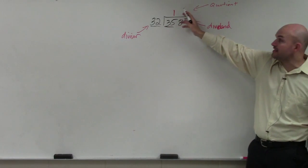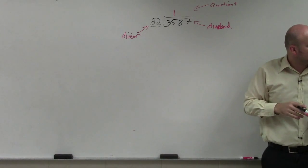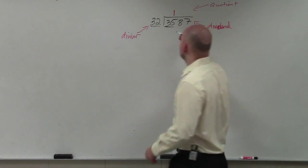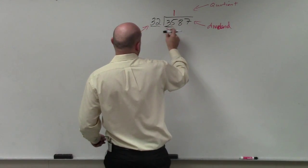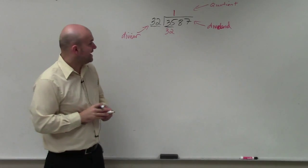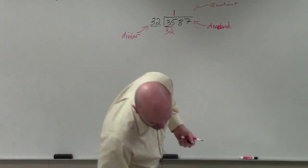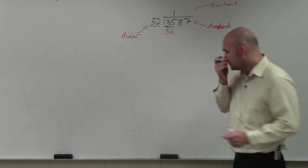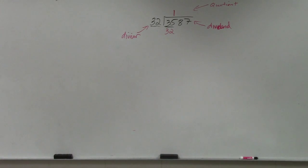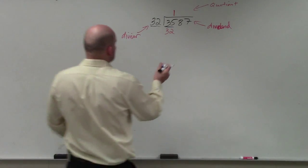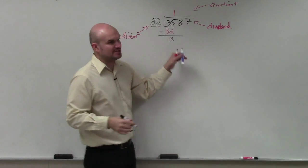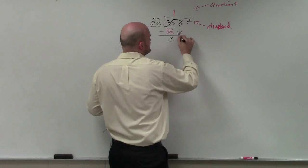Then you take that quotient and multiply it back by your divisor. So 1 times 32 is going to be 32. Then subtract the rows. And this is where a lot of students... when subtracting the rows, I get 3. Now 32 does not divide into 3, so I bring down the next place value. Next number is 38.